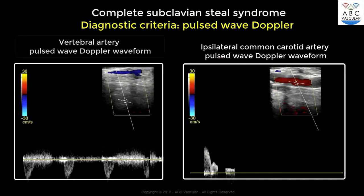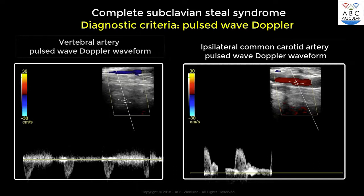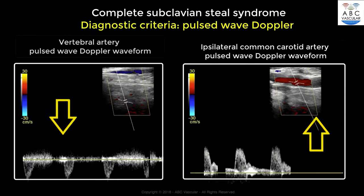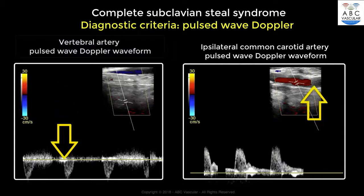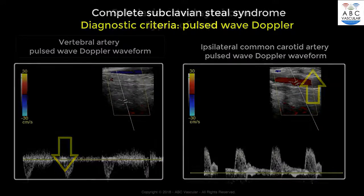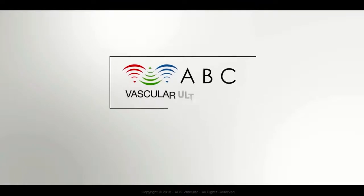When we compare the vertebral artery Doppler waveform with that obtained from the ipsilateral common carotid artery, we can see that the directions of the waveforms are opposite to each other. The vertebral artery waveform is below the baseline, while that of the common carotid artery is above the baseline.